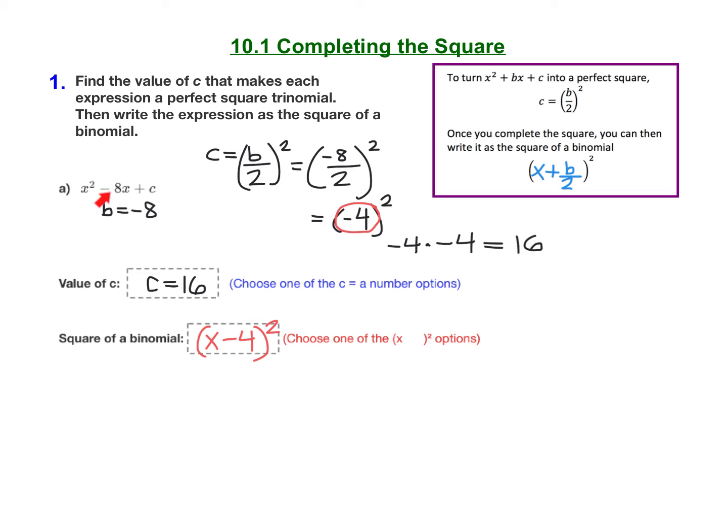Remember that when the b is a negative value, you're gonna have a negative in the middle of the square of your binomial. So if the b is a positive number, then we'll have a plus sign in the square of the binomial formula.